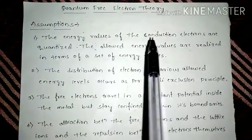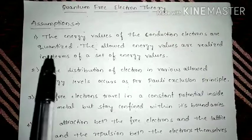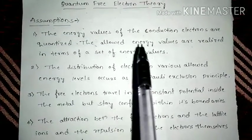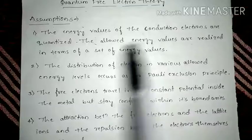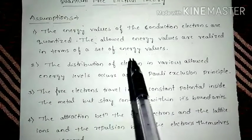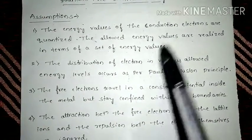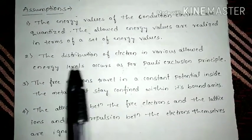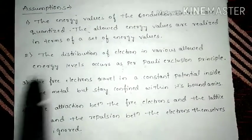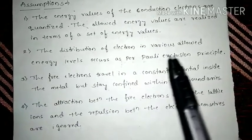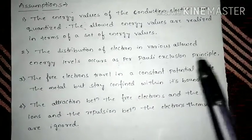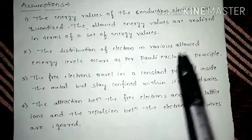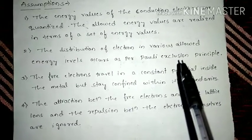The allowed energy values are realized in terms of a set of energy values. This is the first assumption. The second one is, the distribution of electrons in various allowed energy levels occurs as per Pauli exclusion principle. This was not there in the classical theory, but it has been included in the quantum theory.